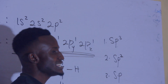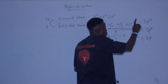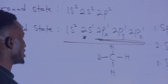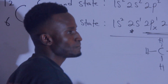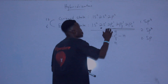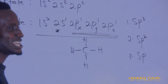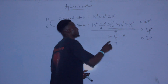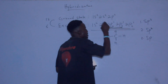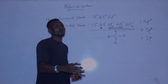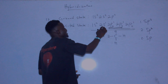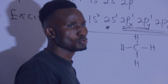The sp³ hybridization is the mixing or blending of a single s orbital with 3 of the 2p orbitals. We have a single 2s here, so sp³ hybridization is the mixing or blending of the 2s orbital with all three 2p orbitals. The sp² hybridization is the mixing or blending of a single 2s orbital with 2 of the 2p orbitals.